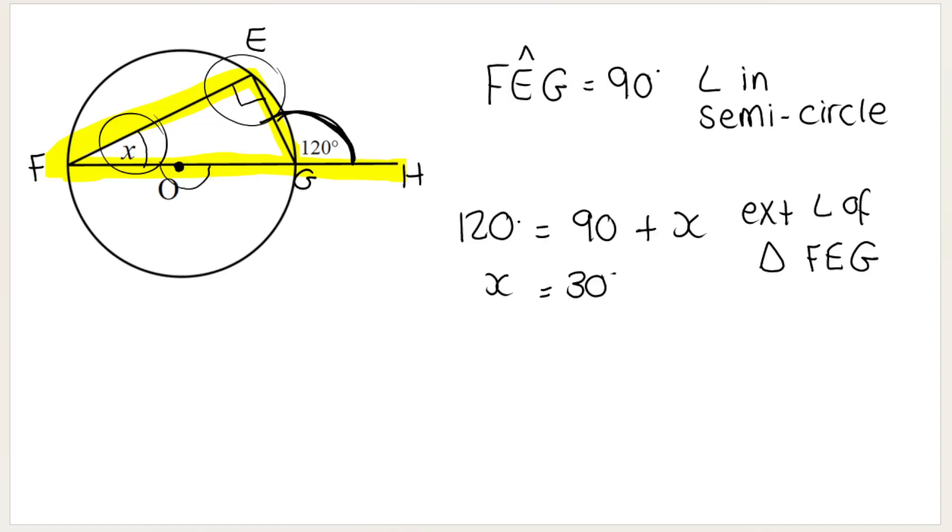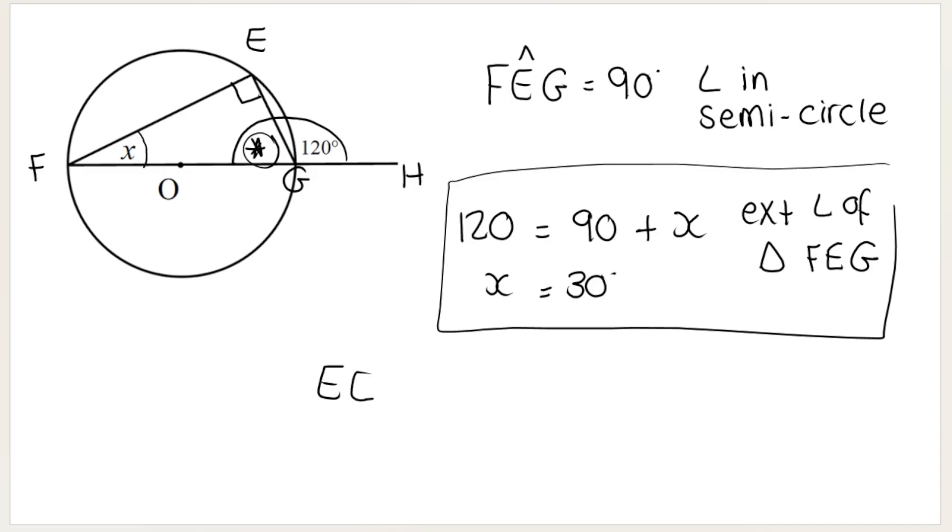Or what a lot of my students tend to do, instead of just jumping to this, is they'll first find this angle over here, so sorry that was a G, this angle over here, by doing angles on a straight line. So EGF, which is this angle, the star over here, is equal to 60 degrees, and that is angles on a straight line. And then they do angle sum triangle with this triangle over here. So if this is 90 and this is 60, then X is 30, angle sum triangle. Either way, it's perfectly correct.